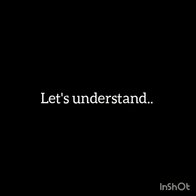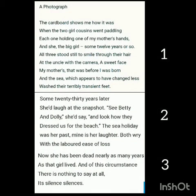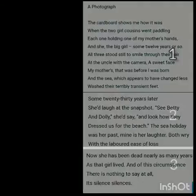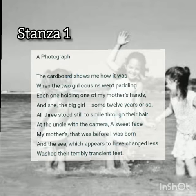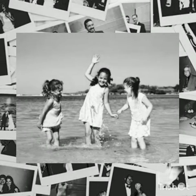Now let's try to understand the meaning of the poem. You can see the entire poem has been divided into three stanzas. Let us first discuss the first stanza. As you read the first stanza, you can see the poet describes looking through a photo album, the pages of which seem to be made of cardboard.